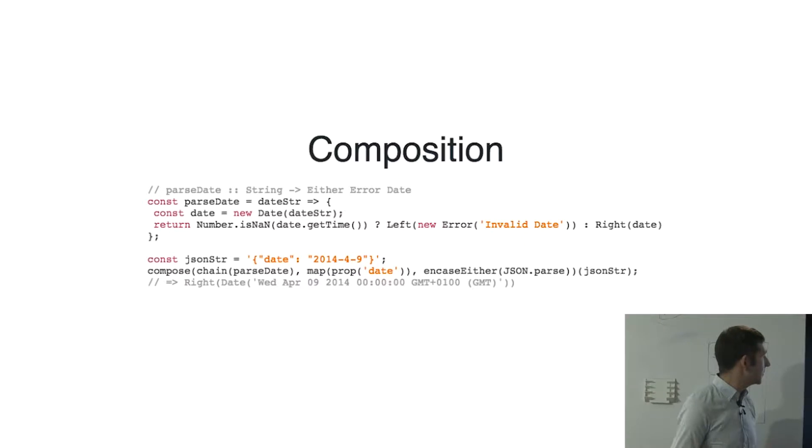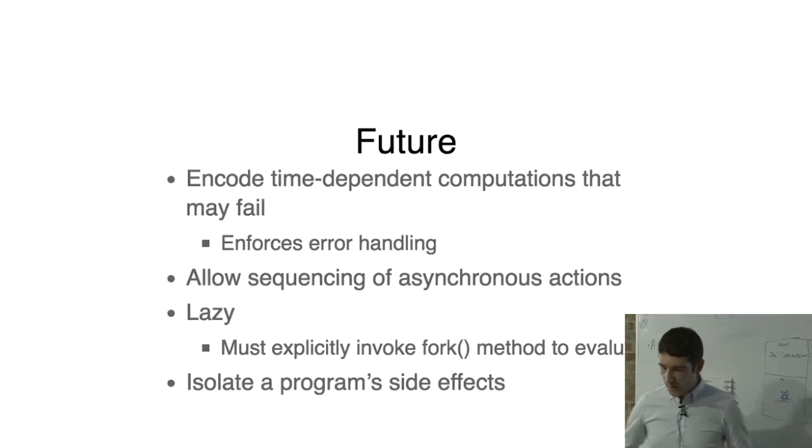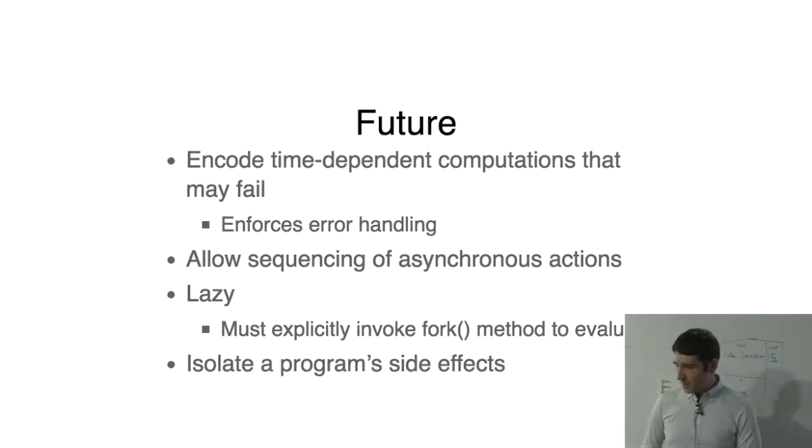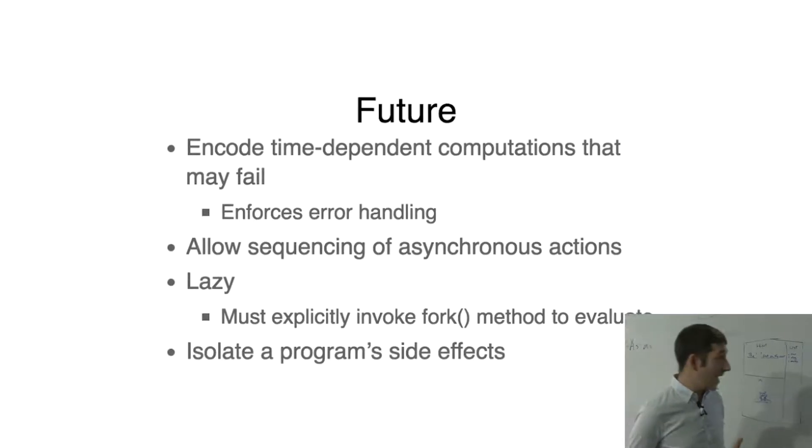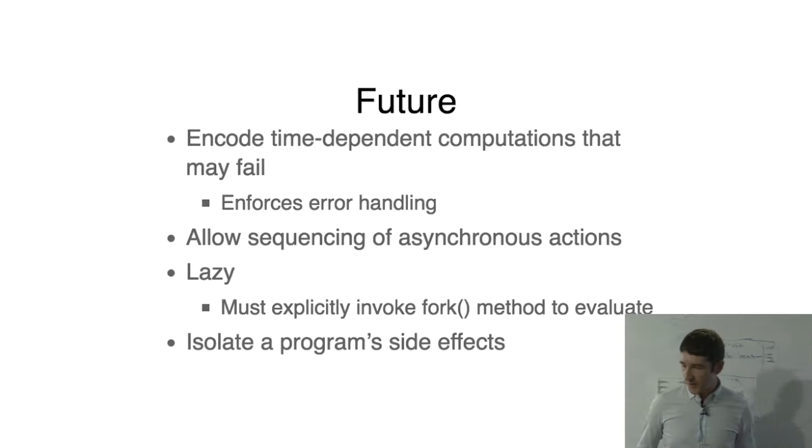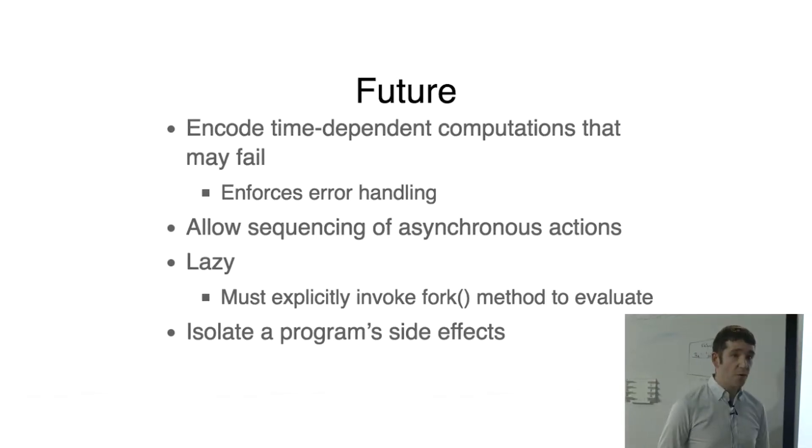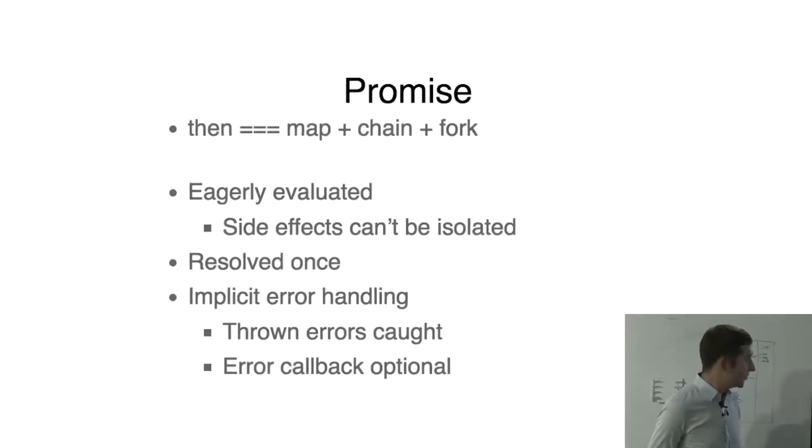So that's kind of skimming over that a bit. So the last one that I'm going to talk about is a future. So again, kind of encodes a failure, but what it also does is it has an element of time in it. You basically pass a future success callback and a failure callback. The failure callback has to be provided. So it basically just allows you to compose asynchronous actions. Futures are lazy. So they have a fork method, which actually tells it to do what you want it to do. And this allows you to isolate program side effects because you decide when they get affected. And the thing about futures as well is that fork can be called multiple times. So it will just reevaluate the computation.